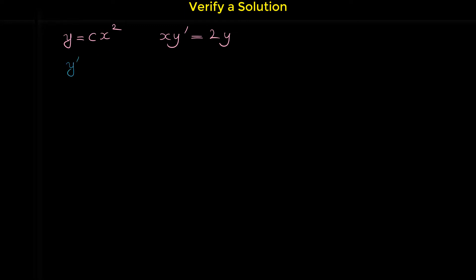First, we have to find y prime because we have y prime in the equation. Since y equals cx squared, y prime — the derivative of cx squared — is 2cx. The derivative of x squared is 2x, and multiplying by c gives 2cx.